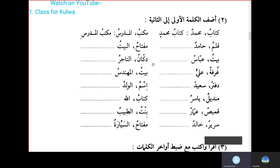Dukkanun al-Tajiru — the shop and the merchant — becomes Dukkanu al-Tajiri, the merchant's shop. Ghorfatun, Aliyyun — Ghorfatu Aliyyin — Ali's room. Baitun al-Muhandisu — Baitul Muhandisi — the engineer's house. Daftarun, Sayeedun — Daftaru Sayeedin — the register of Sayeed. Ismun, Waladun — Ismul Waladi — the boy's name.